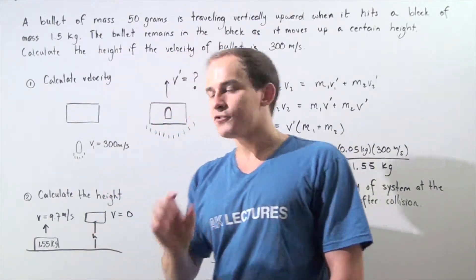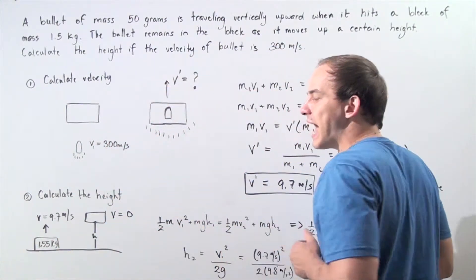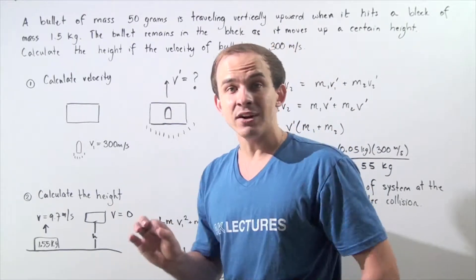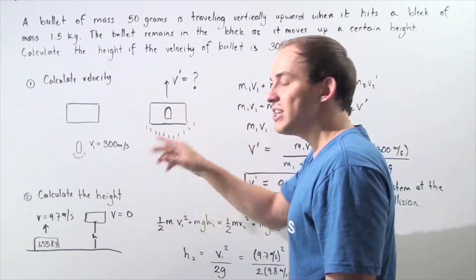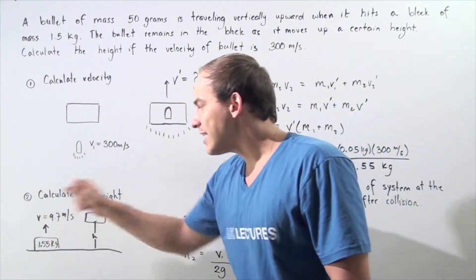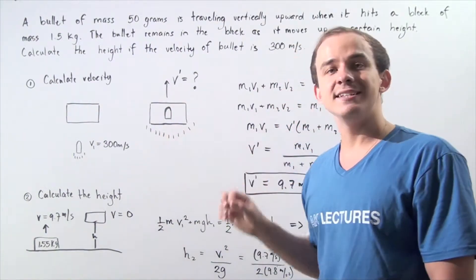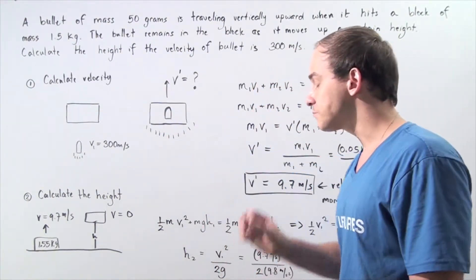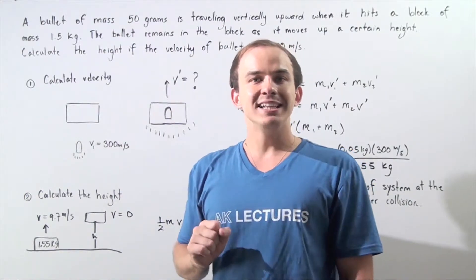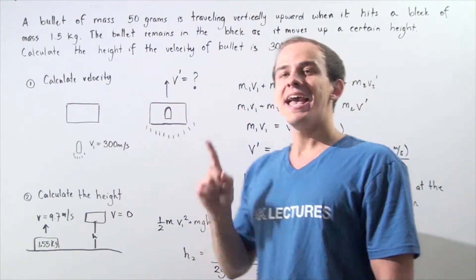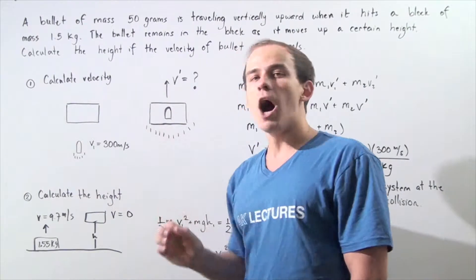In step two, the block-bullet system begins at the ground where height is zero, and eventually reaches some final maximum height where its velocity will be zero. So initially the velocity is 9.7 meters per second, and at the final position the velocity is zero. The only force acting on the system as it moves upward is gravity, and because gravity is a conservative force, we have conservation of energy.